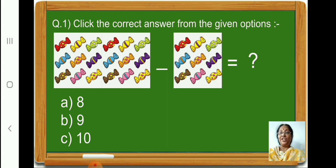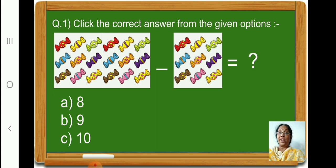Count and see how many chocolates are there in the left hand side box: 1, 2, 3, 4, 5, 6, 7, 8, 9, 10, 11, 12, 13, 14, 15, 16, 17, 18. So in the left hand side box, we have 18 chocolates. Now let us count and see how many chocolates are in the right hand side box: 1, 2, 3, 4, 5, 6, 7, 8, 9. We have to take out 9 chocolates from 18 chocolates. 18 minus 9 is equal to 9. Therefore, let us put a tick for the correct option B, 9.